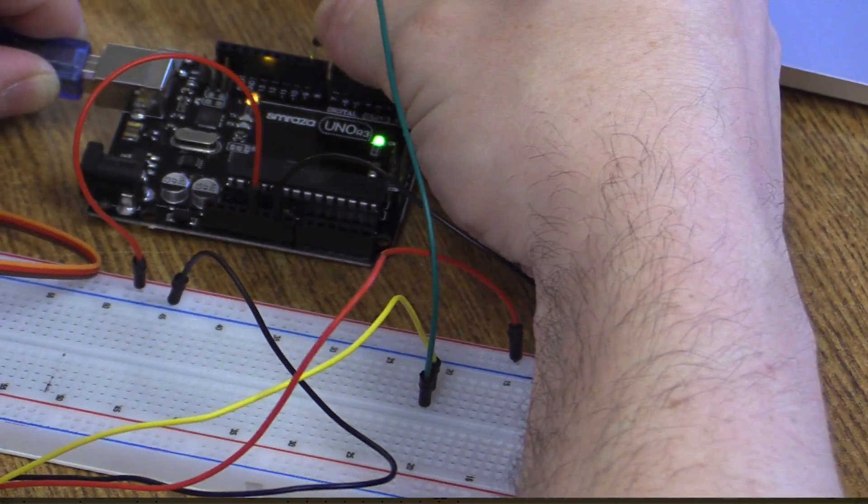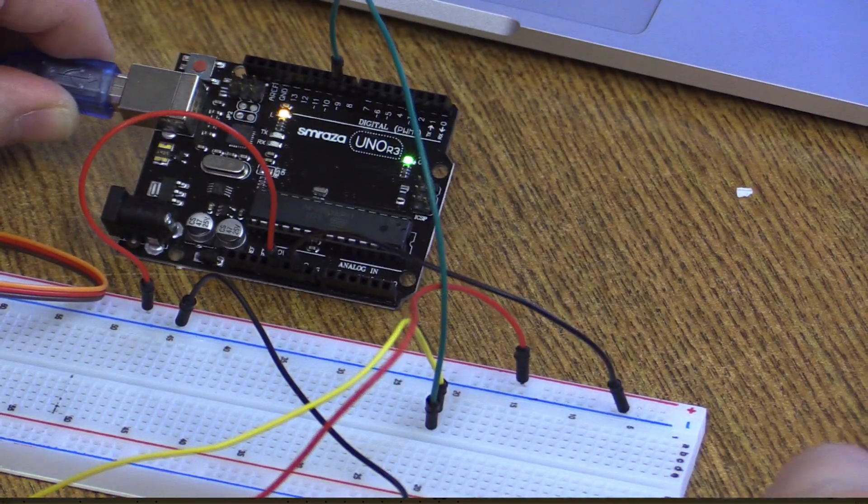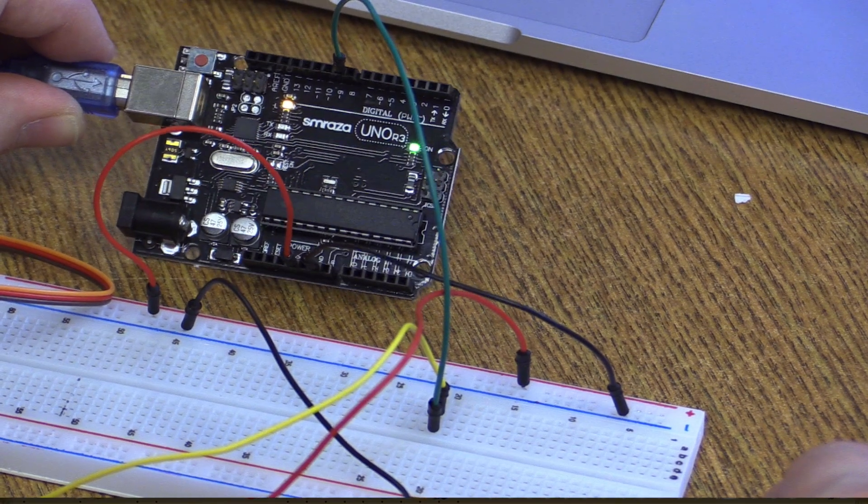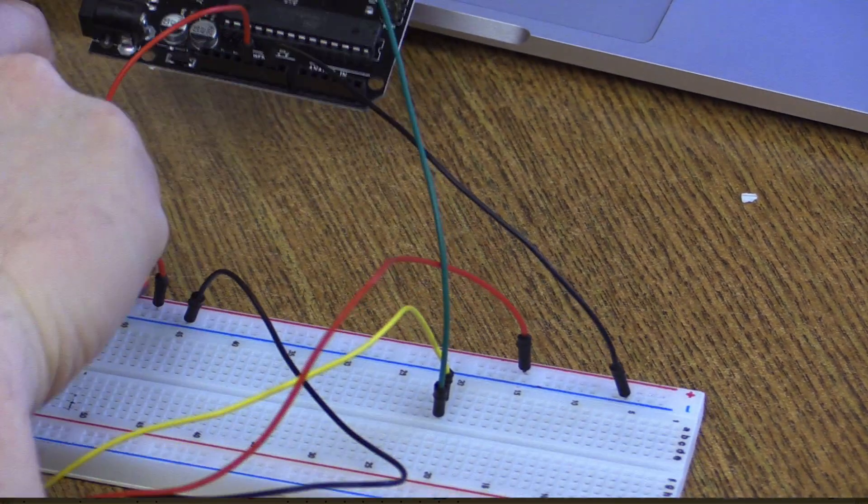We're going to put this in number 9 because you're going to see in a bit that the code is going to tell us to send the instructions at number 9. So we've got our servo all hooked up.